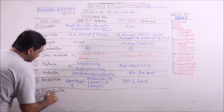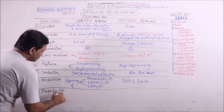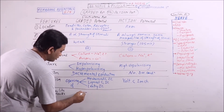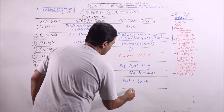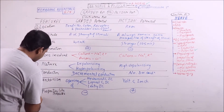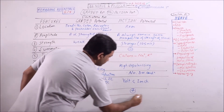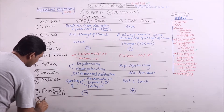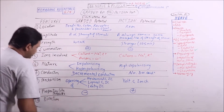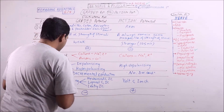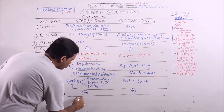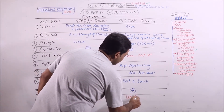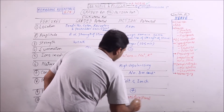Properties like threshold value. There is no threshold potential or threshold value for graded potential, but for action potential, it is present. Direction: graded potentials move in all directions, but action potentials are always unidirectional.